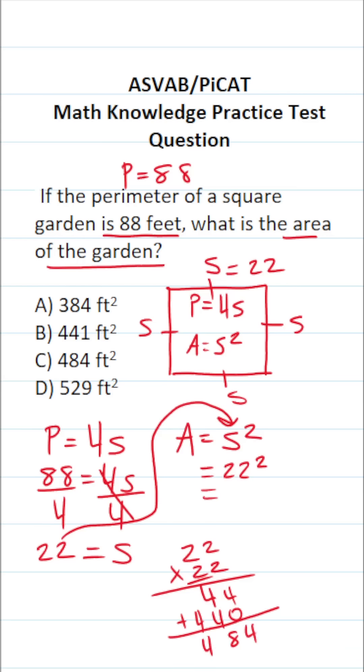So the area of this square garden that has a perimeter of 88 feet is going to be 484 square feet, which is answer choice C, of course.